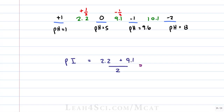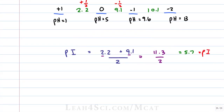The isoelectric point is the average of the two pKa values just before and just after zero. When the pH equals the pKa at 2.2 we expect a charge of plus one-half, and when the pH equals 9.1 we expect a charge of minus one-half — the average of plus half and minus half is zero. So the PI equals 2.2 plus 9.1 divided by two. Adding: 2 plus 9 is 11, 0.2 plus 0.1 is 0.3, giving 11.3 divided by 2. Rounding to 11.4 gives 5.7, or rounding 11.3 up to 12 and dividing by 2 gives approximately 6. The exact value of 5.7 is slightly less than 6, consistent with rounding up.